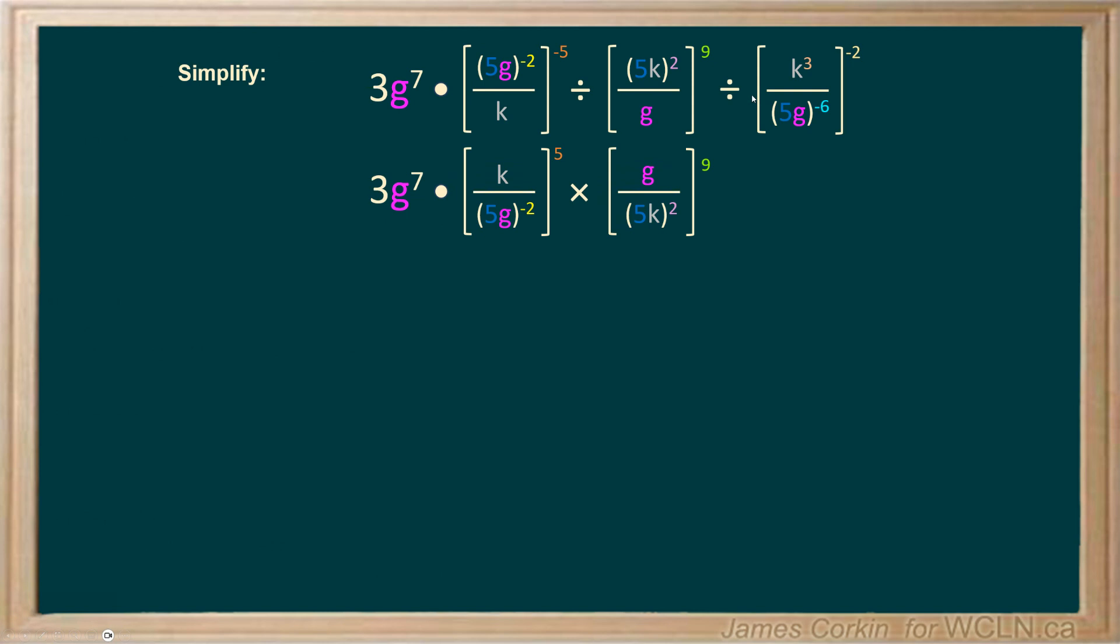Now if we look at this third term, we have a divide sign and we have a negative sign. Well, if you flip a fraction twice, you simply end up back with the same fraction again. So we're going to make our divide sign a multiply, make our negative positive, and we end up with the same fraction that we started with. So I recommend that as your first step: try and remove all divide signs and all negative outer exponents, like those outside of large brackets.